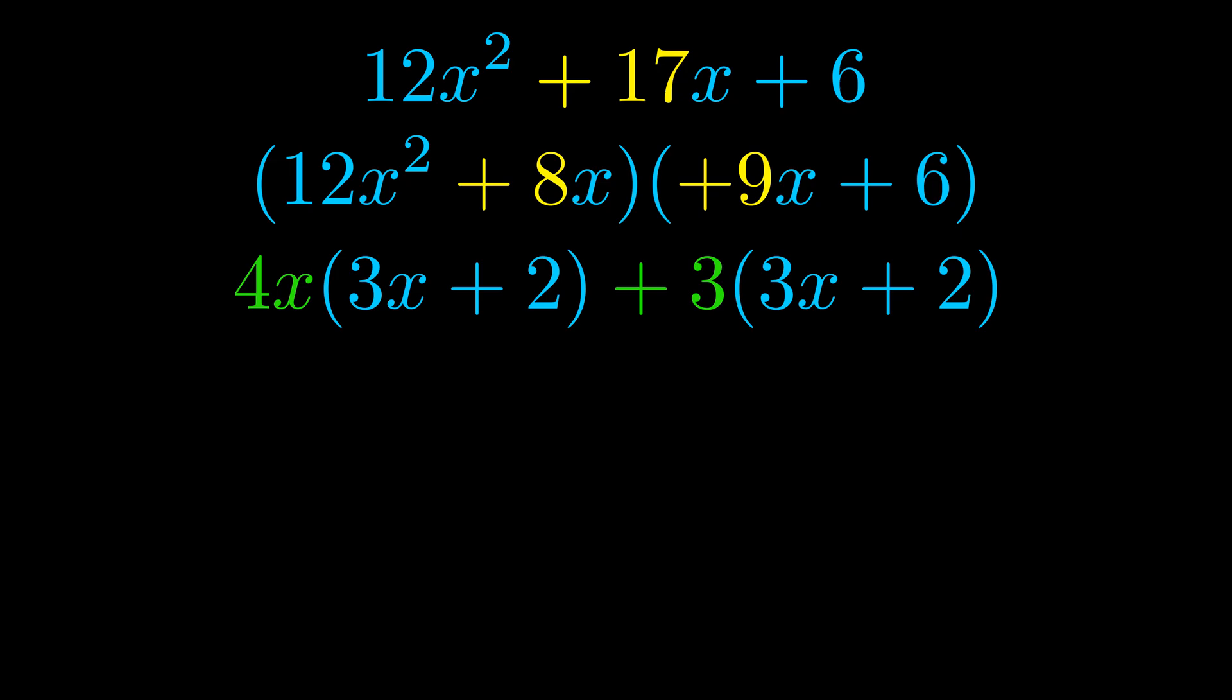Notice also how what remains inside of the parentheses is the same in both cases. The blue values are the same. Those blue values will become one of our factors and we will combine the two green values, the GCFs that we pulled out, to get the other one. And that is our fully factored equation.